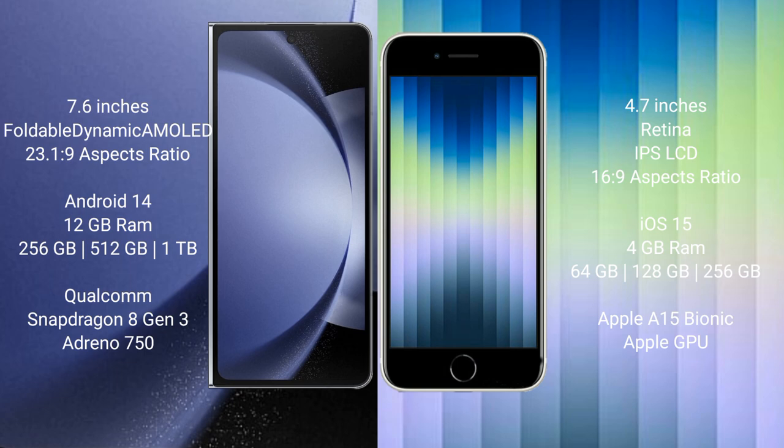iPhone AC comes with 4GB RAM and 64GB, 128GB, or 256GB internal storage options. It features an Apple A15 Bionic processor and Apple Graphics GPU.